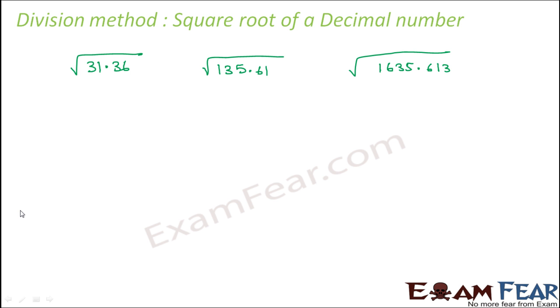Now, I will not do the entire process. I will just show how the first step is different. In the first step, when you put the bars, normally we start putting the bars from the unit space. So the rule will remain the same for the whole number part of the decimal number, because a decimal number has the whole number part on the left-hand side and the decimal part on the right-hand side.